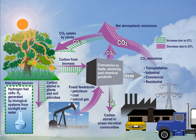Systems ecology is an interdisciplinary field of ecology, a subset of earth system science, that takes a holistic approach to the study of ecological systems, especially ecosystems. Systems ecology can be seen as an application of general systems theory to ecology. Central to the systems ecology approach is the idea that an ecosystem is a complex system exhibiting emergent properties. Systems ecology focuses on interactions and transactions within and between biological and ecological systems, and is especially concerned with the way the functioning of ecosystems can be influenced by human interventions. It uses and extends concepts from thermodynamics and develops other macroscopic descriptions of complex systems.